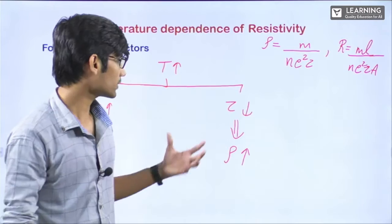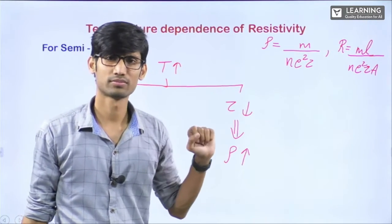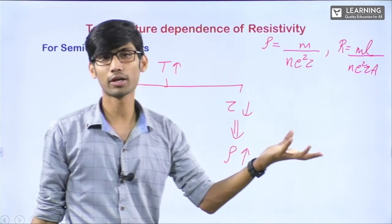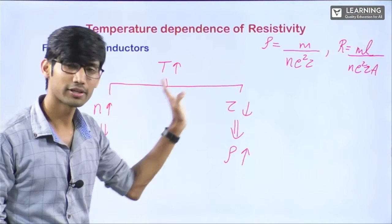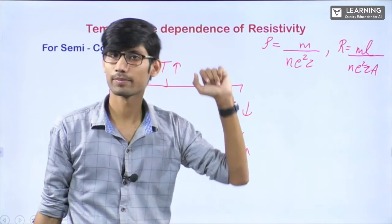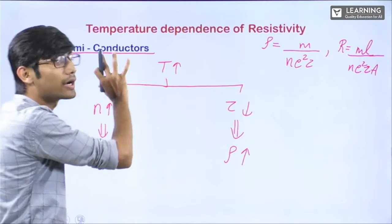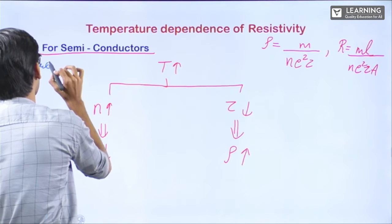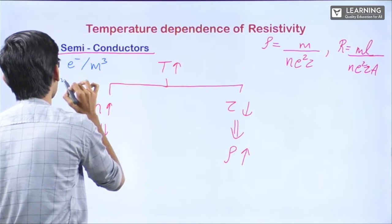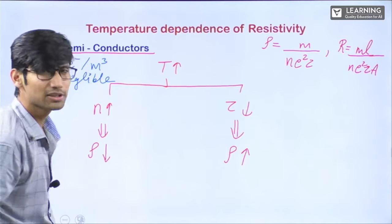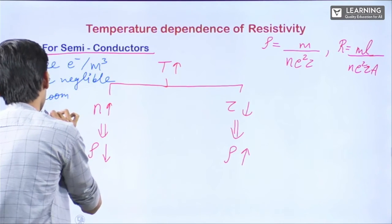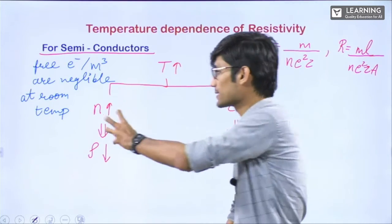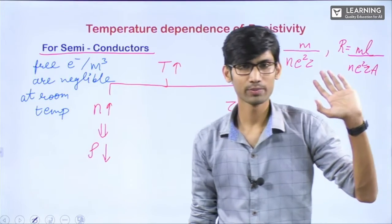For semiconductors, the number of free electrons per unit volume is negligible. Semiconductors are basically insulators to which we add some impurities; because of those impurities, some charge carriers come in, which is why by increasing temperature, conductivity also increases. As of now, understand that for semiconductors, the number of free electrons per meter cube is negligible at room temperature. So if we raise the temperature, the number of free electrons will increase, and this time this effect will be more significant.